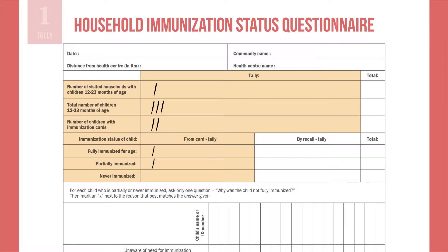If the card is not available, but the caregiver can still provide immunization history, tally whether the child is fully, partially, or never immunized under the by recall tally.